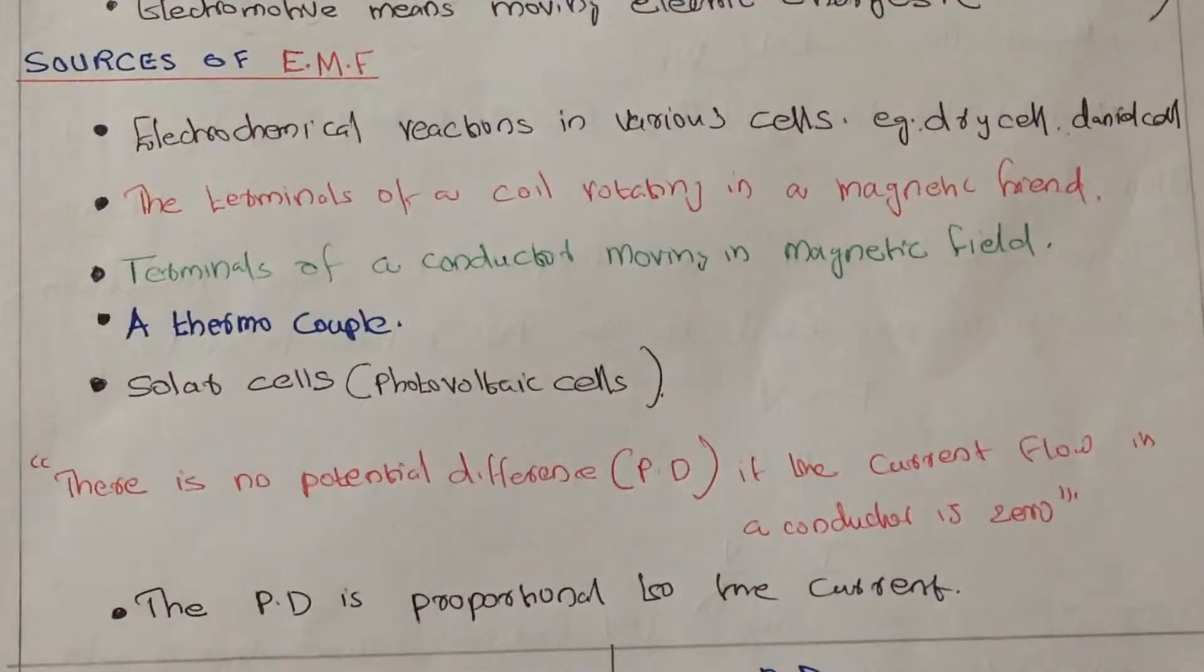Everybody knows about cells like batteries, different types of cells. Due to the chemical reaction, EMF is produced. That is the first one.